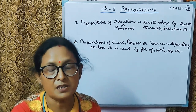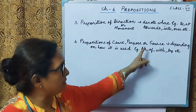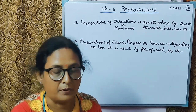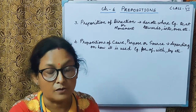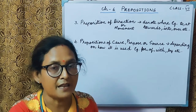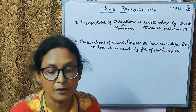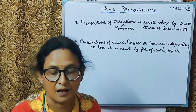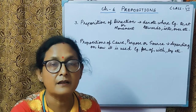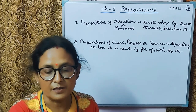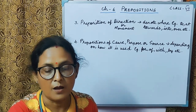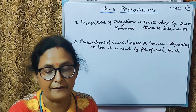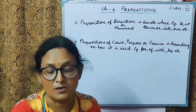Now coming to the prepositions of cause, purpose, or source. Depending on how a preposition is used, it can suggest cause or purpose — the use in the sentence will tell you how it is being used. Some examples of such prepositions are: for, off, with, by, from, etc. For example, 'this is just the place for a picnic' — here you are expressing a purpose. 'He suffered from fever for five days' — here it is the cause you are referring to.